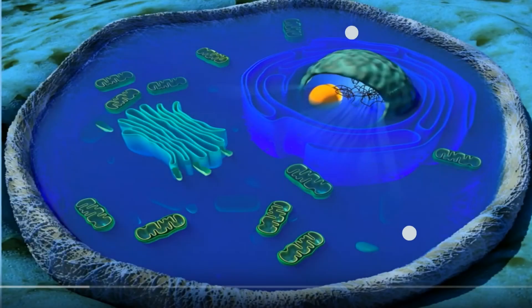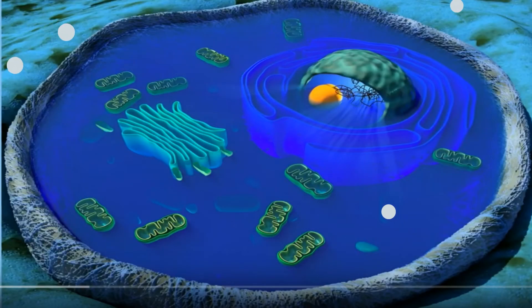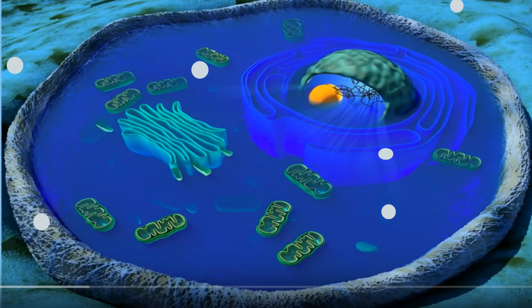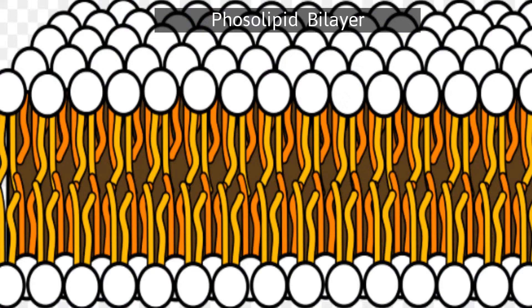In order to maintain stable internal conditions and stay alive, a cell needs to move materials in and out of the cell membrane. The cell membrane is considered semipermeable and is a phospholipid bilayer.